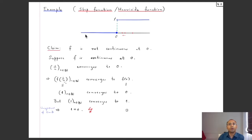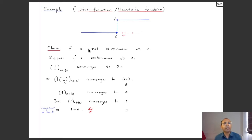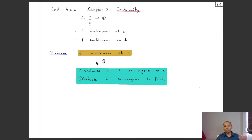Let us recall the Heaviside function. Its graph looks like this: for all x ≤ 0, f(x) = 0, and for x > 0, f(x) = 1. We had already shown using the definition that this function is not continuous at 0 — there is a jump in the graph. Now I want to again deduce that the function is not continuous at 0, but using the sequential characterization theorem. We assume continuity at 0 and seek a contradiction: a sequence converging to 0 for which f(xₙ) does not converge to f(0) = 0.